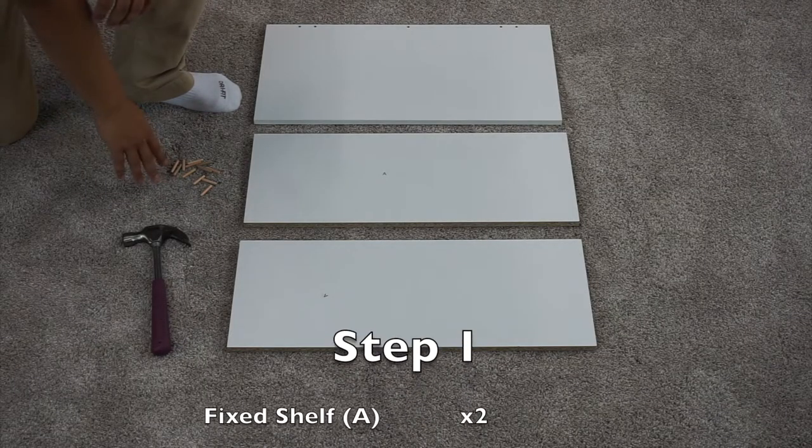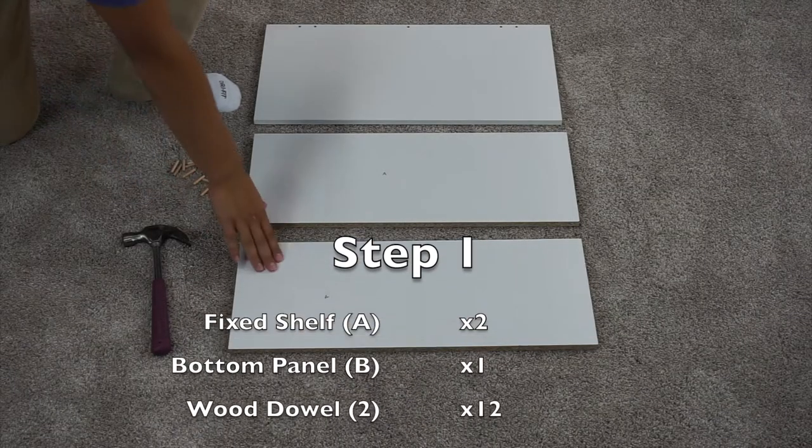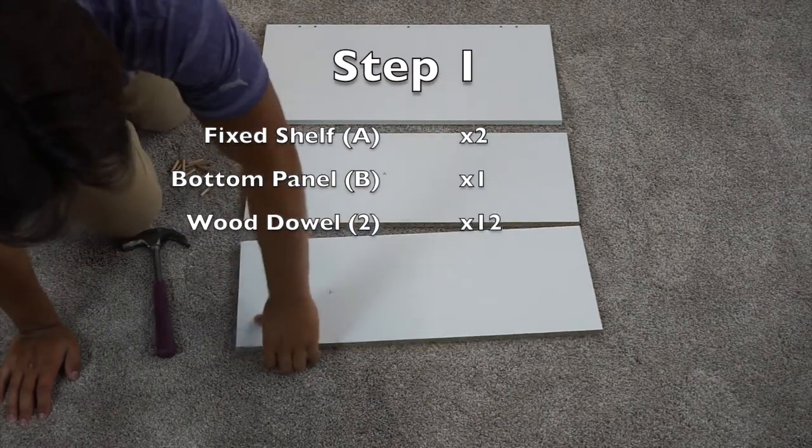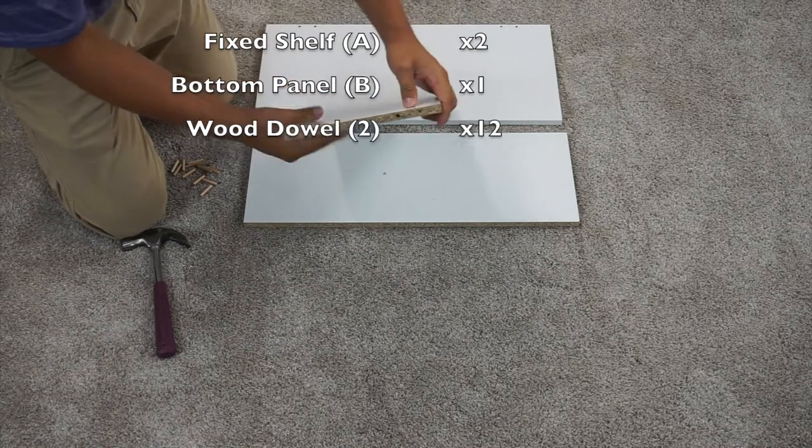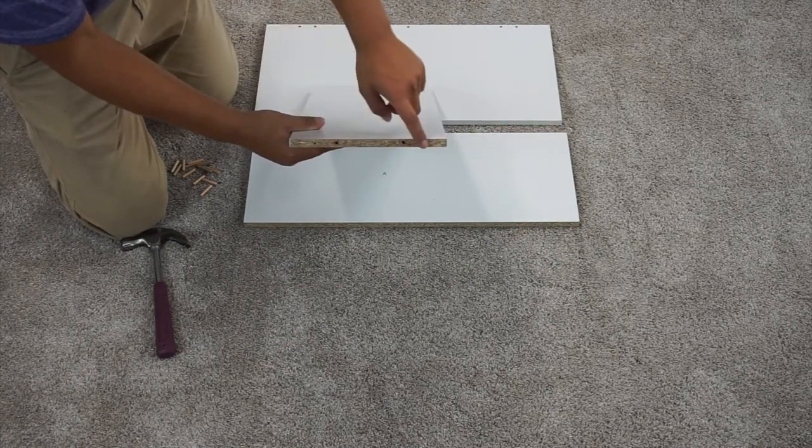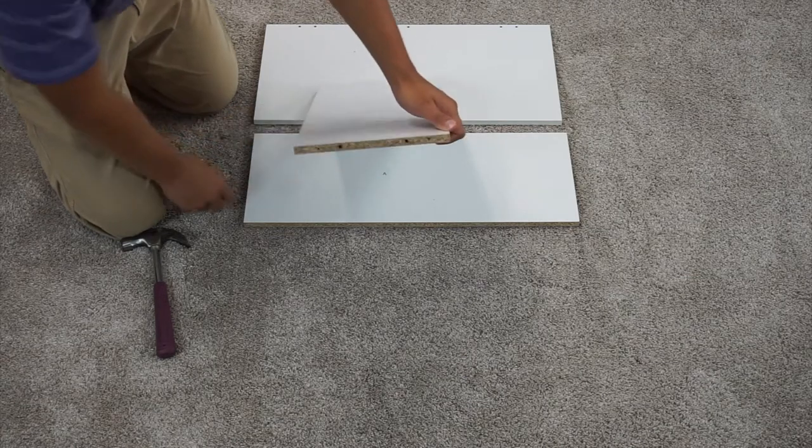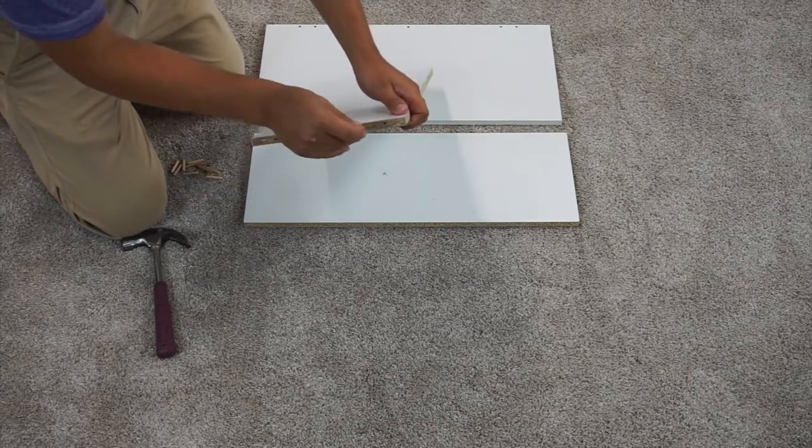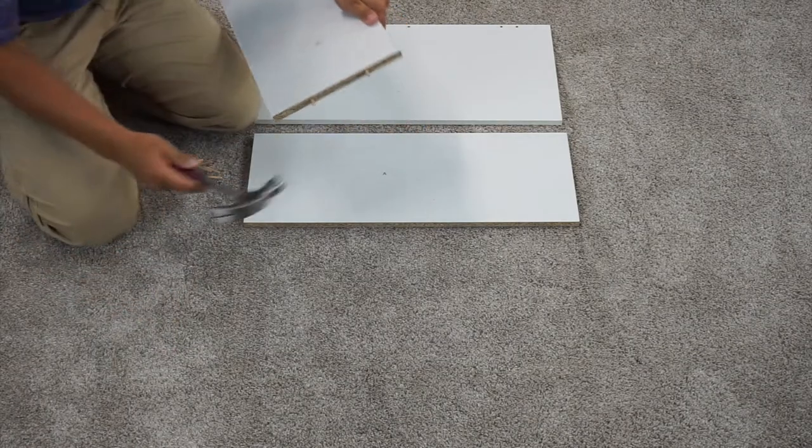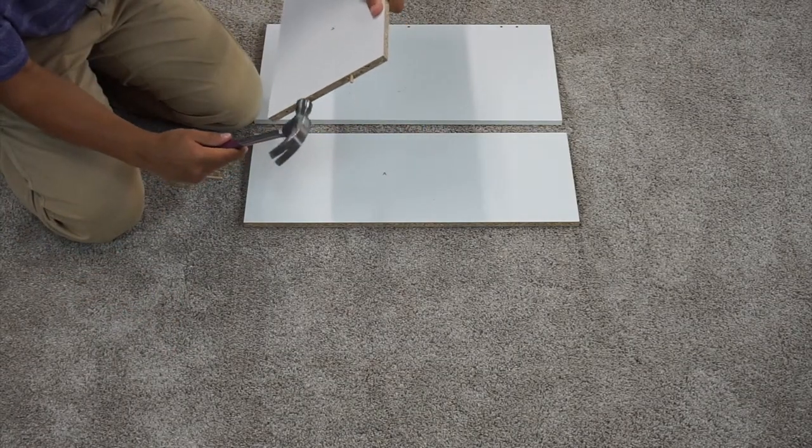For step one you're going to want to take twelve wood dowel pieces, your two A panels, and your B panel. Start by inserting the wood dowels into the two inner pre-drilled holes, not these outer two screw holes. You want to leave about three-eighths of an inch sticking out of the panel and if it doesn't slide in all the way you can gently hammer it in a little.